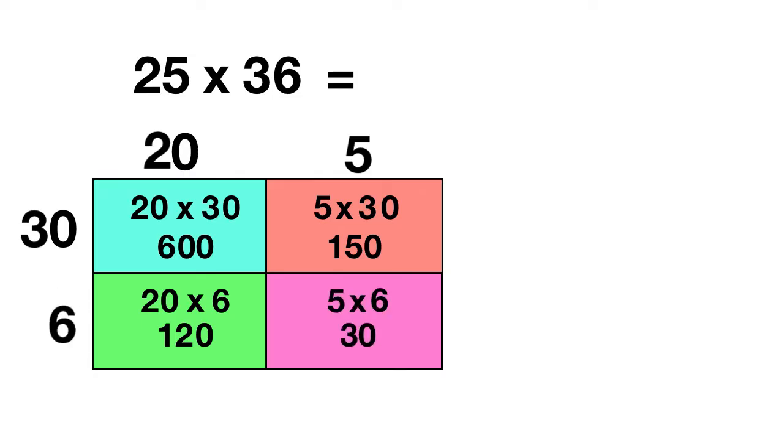Now, what do we need to do with all of these pieces? You need to add together all of the pieces of the area model, so we have 600 plus 120 plus 150 plus 30. When you add all of that up, 0 plus 0 plus 0 plus 0 is 0. In the tens, we have 0 plus 2 plus 5 plus 3. That is 10, so we need to regroup. Then we add 1 plus 6 is 7, 7 plus 1 is 8, 8 plus 1 is 9. So 25 times 36 equals 900.